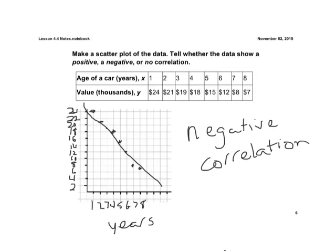Negative correlation. Downhill from left to right. As the years increase, the value of the car is obviously going to decrease. That's our negative correlation.